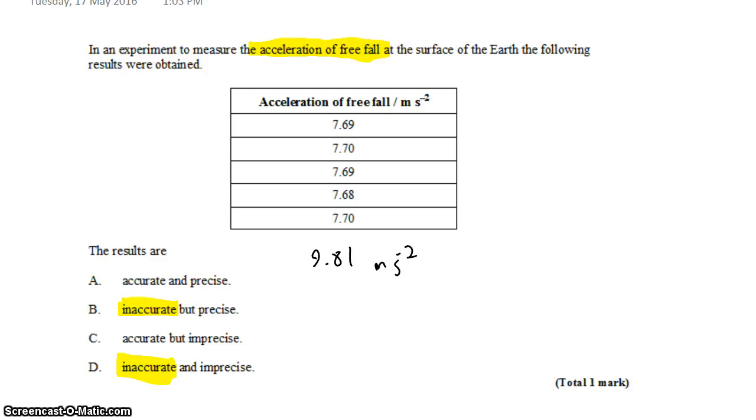And what we see is that all of these values are very close to each other. 7.69, 7.70, 7.69, 7.68, 7.70. They all differ by just two hundredths of a meter per second squared. So they all agree with each other very, very well, even though they're all wrong.